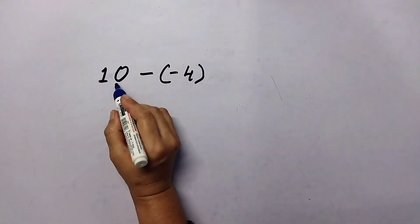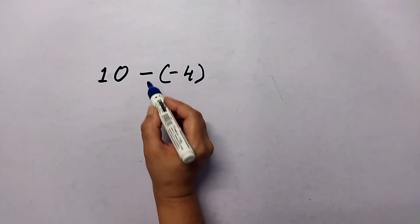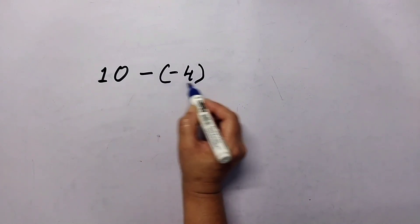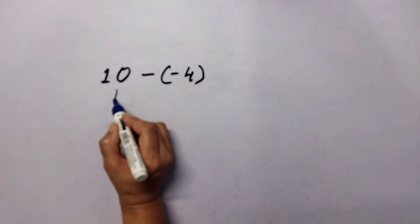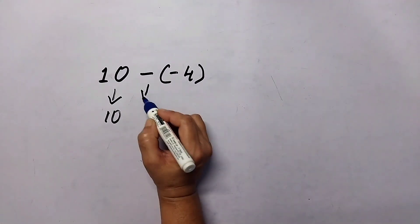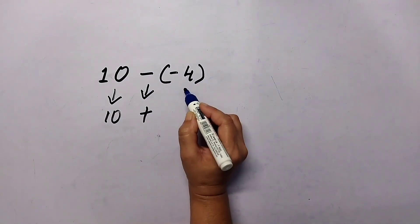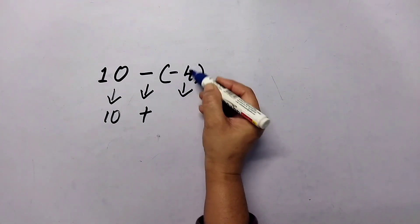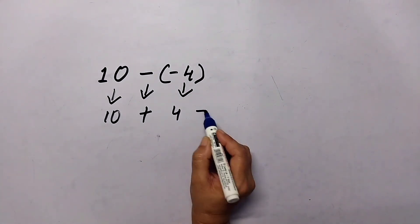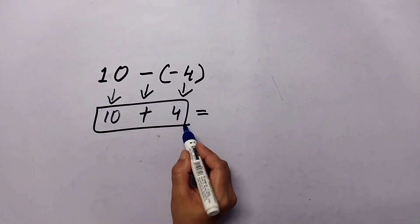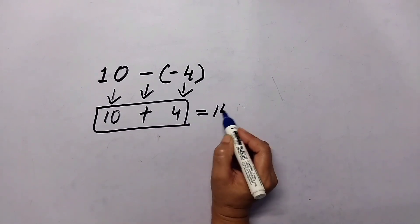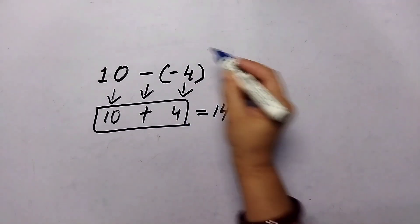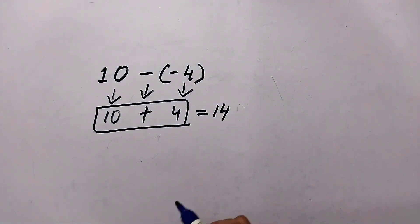Let us take another example: ten minus negative four. Here the subtraction becomes addition, and negative four becomes its additive inverse, positive four. So we get the addition fact ten plus four, which is simply fourteen. In this way you can subtract integers. You must practice with more examples — it is the simplest way to add and subtract integers.